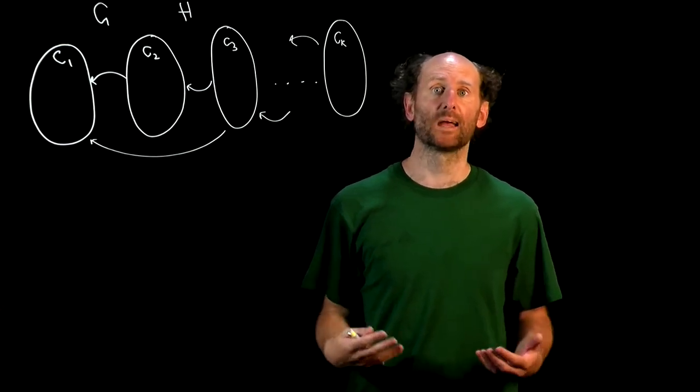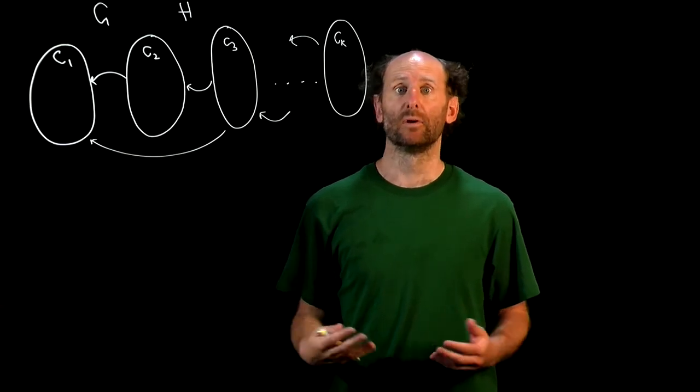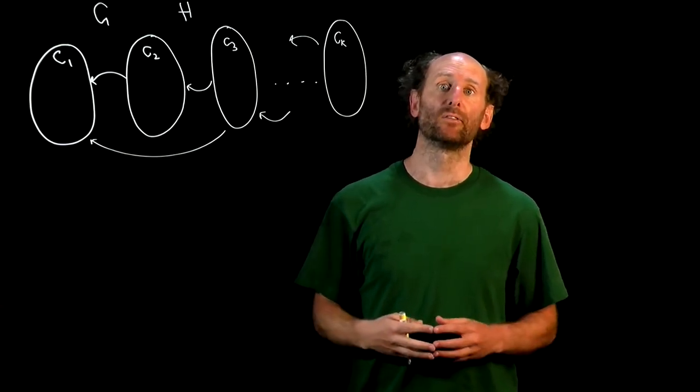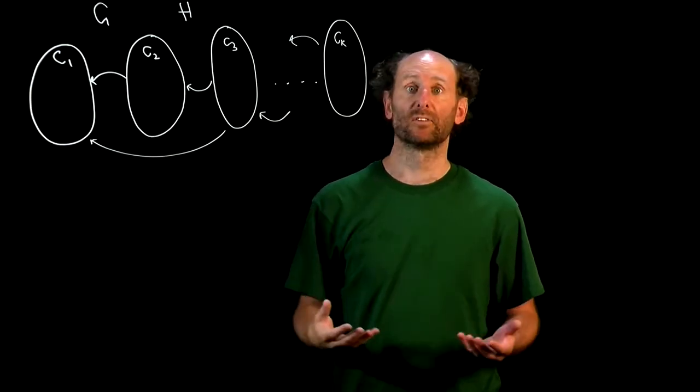And if you think about it, H must be a DAG, a directed acyclic graph, as if it had any cycles, all the strong components on that cycle would just be a single strong component within G. So let's look at this.